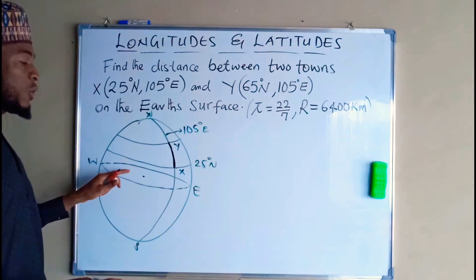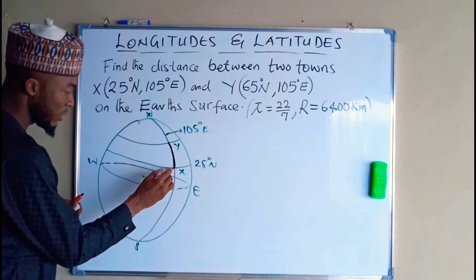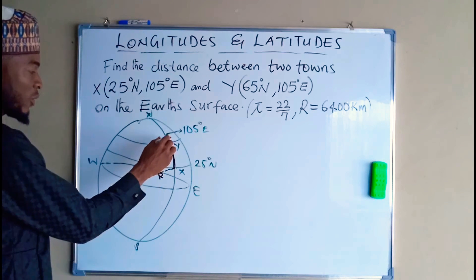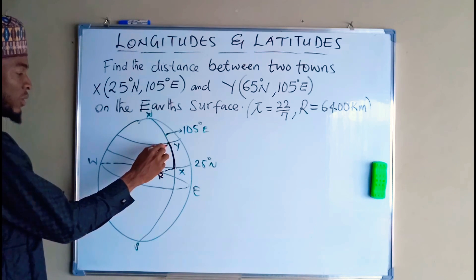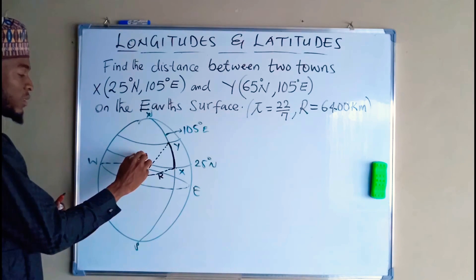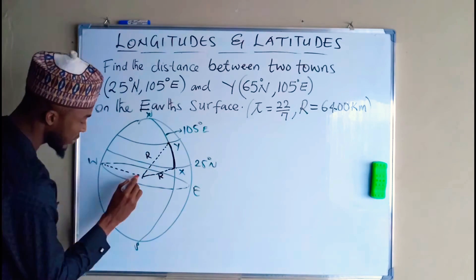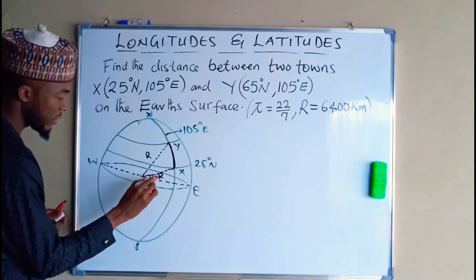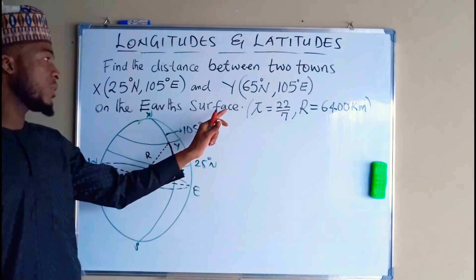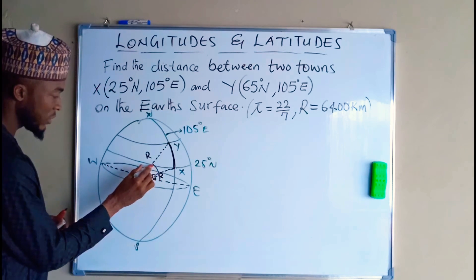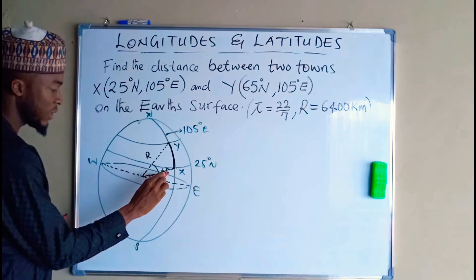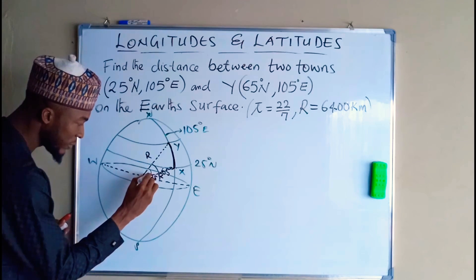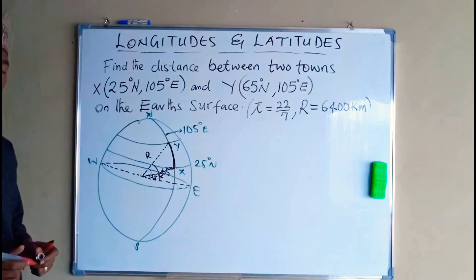It's an arc from the equator where the two angles are measured from. The radius of the earth from that point is R, and also from the other town Y to the center is also another R. So the first angle is calculated as 25 degrees, while the second angle is calculated from the origin, 65 degrees. To obtain the angle here, you need to subtract 25 degrees from 65 degrees.